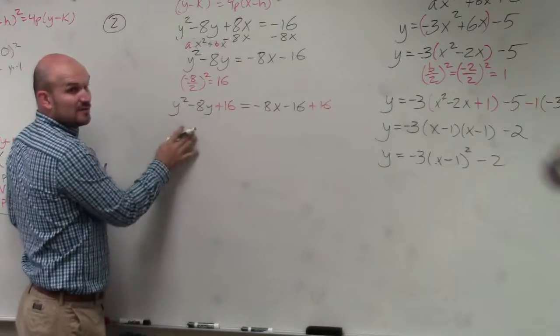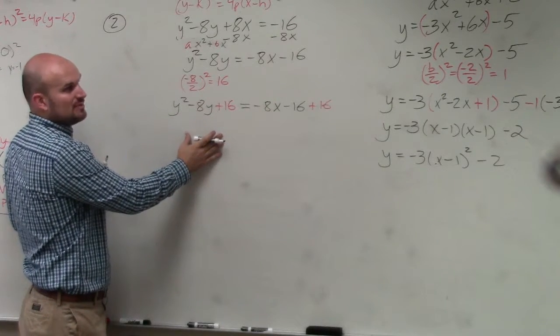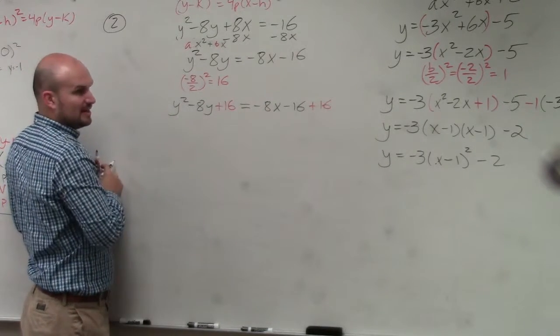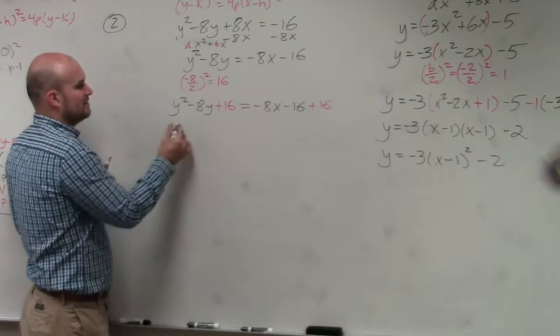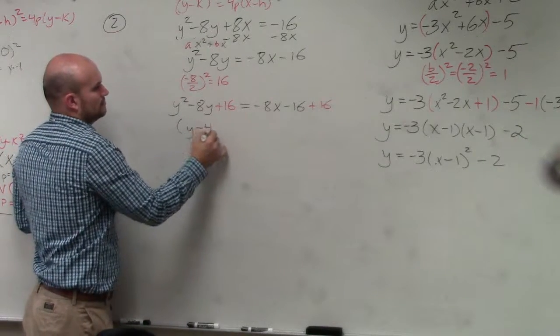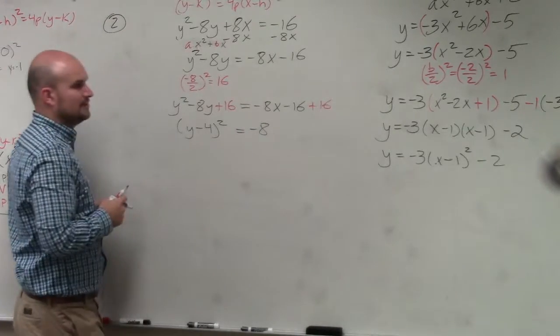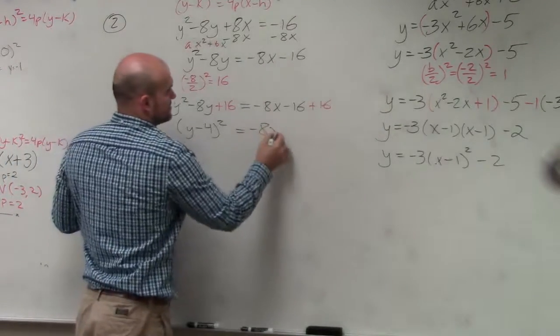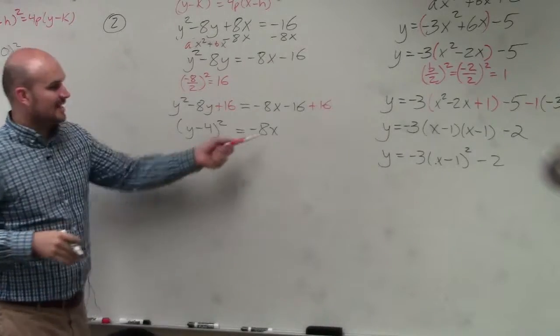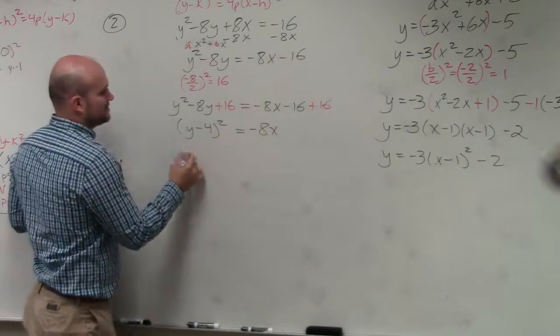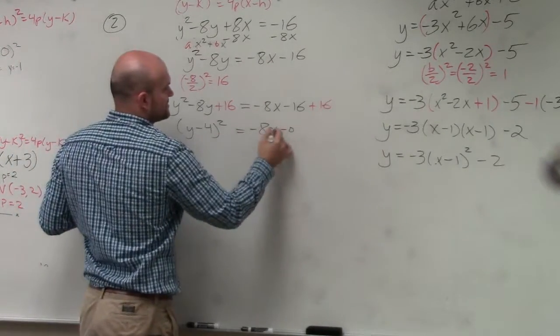Then I created a perfect square trinomial, which can be factored to a binomial squared. What two numbers multiply to give you 16 and add to give you negative 8? Negative 4. And that goes to 0, right? Oops, that's x. Now, I can't factor anything else out on here. So you could say that's minus 0 if you wanted to.